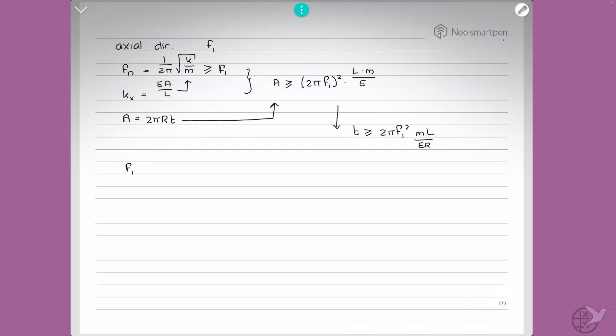If we then substitute all the numbers, so F1 is equal to 31 Hz, M is equal to 2500 kg, L is equal to 5 m, and R is equal to 0.5 m, and the modulus of elasticity for aluminum is equal to 72 GPa, which is 72 times 10 to the power of 9 N per meter squared. If we substitute all of these numbers into this formula, we find that the minimum required wall thickness in axial direction has to be larger than 0.0021 m or 2.1 mm. So this is for axial direction.